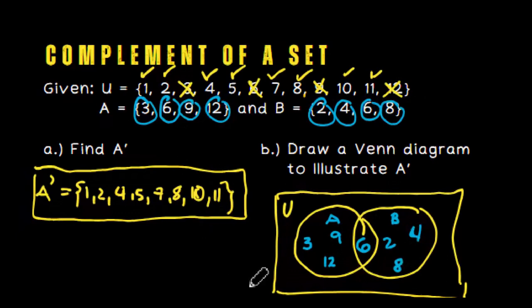And the rest, the ones I haven't written yet. We have 1, then 2 is already written, 3 is already written, 4 is also there. Then 5, 7, 8, 10, and 11. Okay, we've written all the elements outside the two sets.